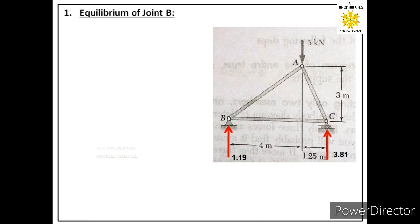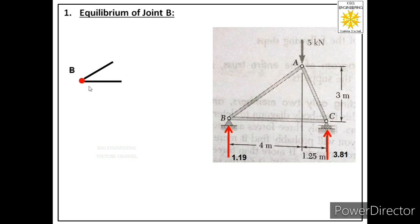Step 1: Equilibrium of joint B. If joint B is in equilibrium, two equations apply — summation Fx = 0 and summation Fy = 0. To apply them, we draw the free body diagram of joint B. We label the joint, then show the two members connected to it: one horizontal member (BC) and one inclined member (BA).